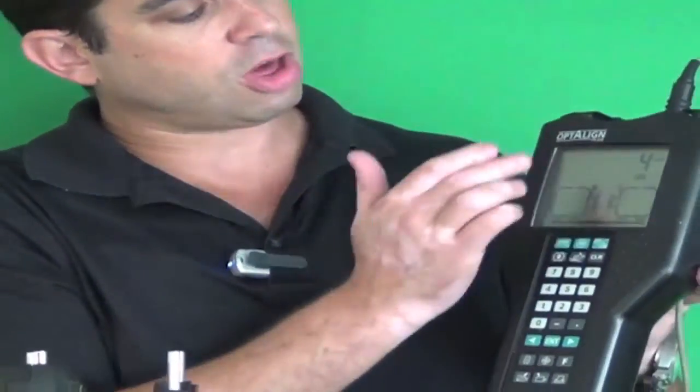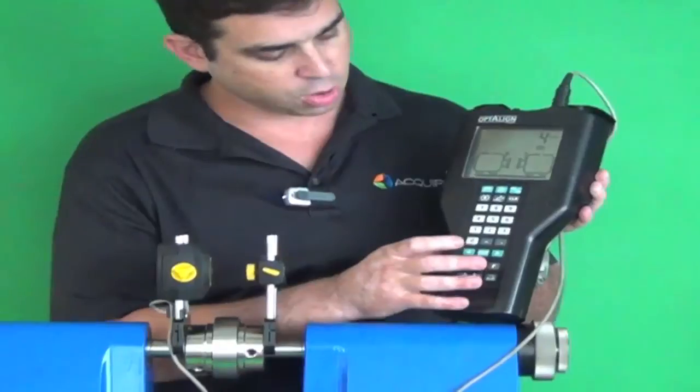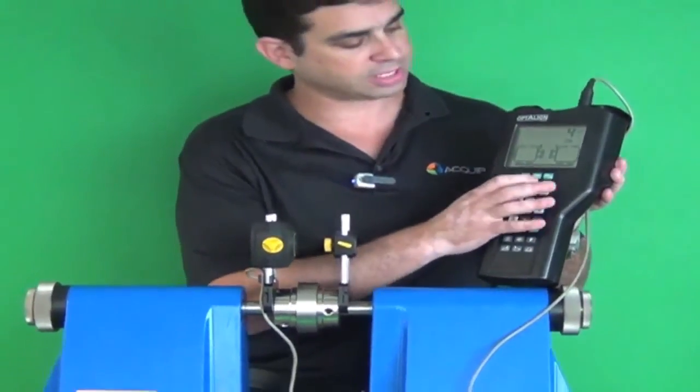Okay, we cycle all the way back through to the beginning dimension. That's how we know that they're all entered. Once we have all these dimensions entered, we press the measurements button.